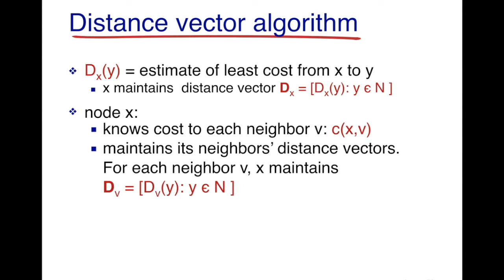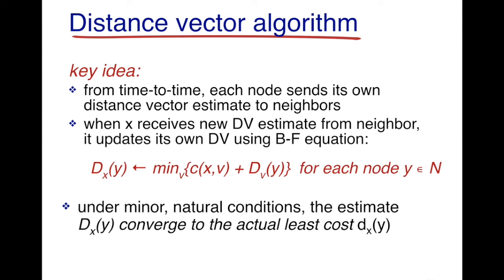Each node knows its direct cost to each of its neighbors, denoted cxv. Every node maintains a distance vector — a vector of estimated distances to all other nodes in the network. The key idea is that every node sends its distance vector estimate to its neighbors periodically. When it receives new distance vector estimates from neighbors, it uses the Bellman-Ford equation to update its least cost paths, and the hope is that the estimates converge to the actual least cost values.